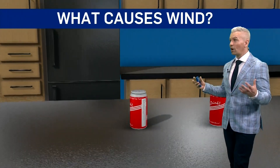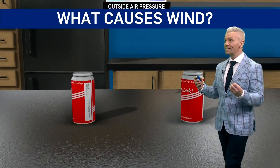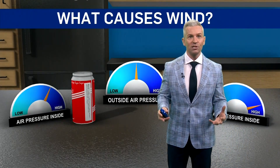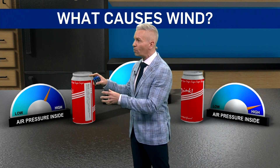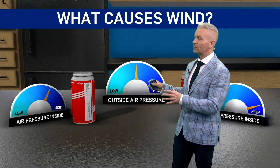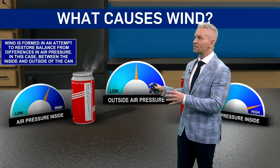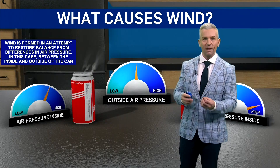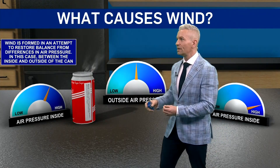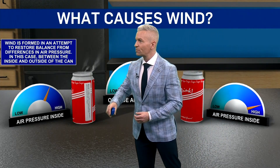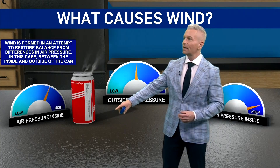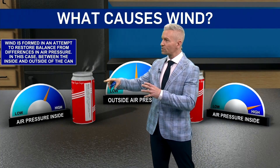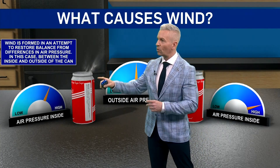Now let's take a look at what causes wind. It's a difference in air pressure. Here's an analogy with pop cans, which have a higher pressure inside the can compared to what is outside. So in an attempt to restore balance in the differences in air pressure — in this case between the inside and the outside of the can — once you open it, there's a release of gases, almost like a little bit of a wind.